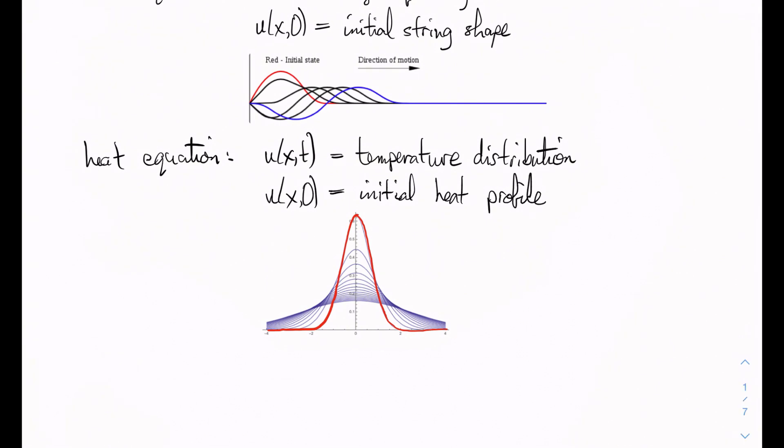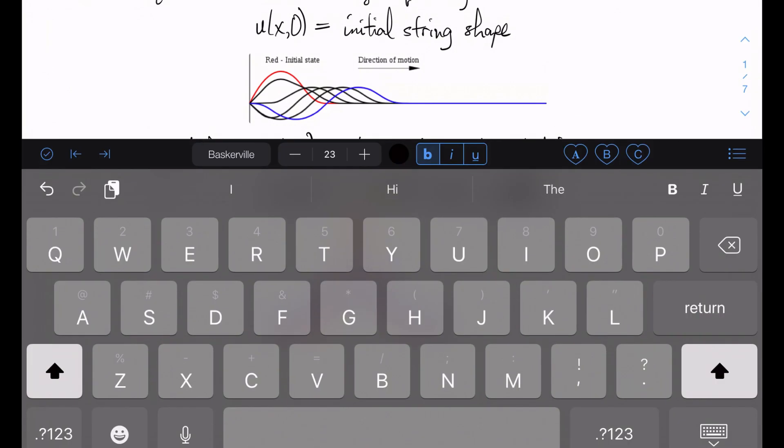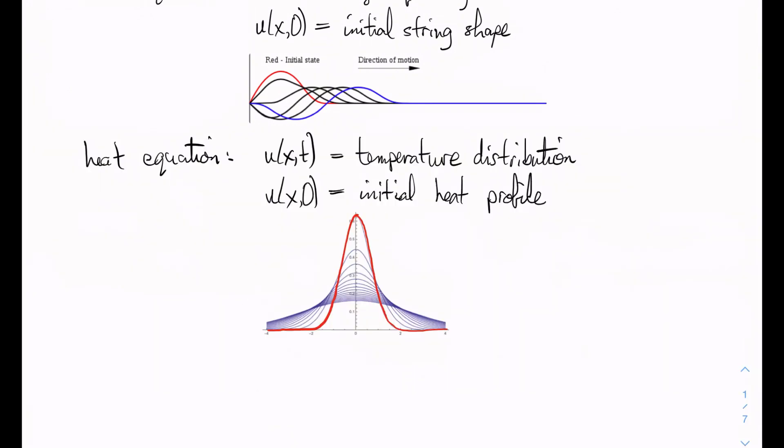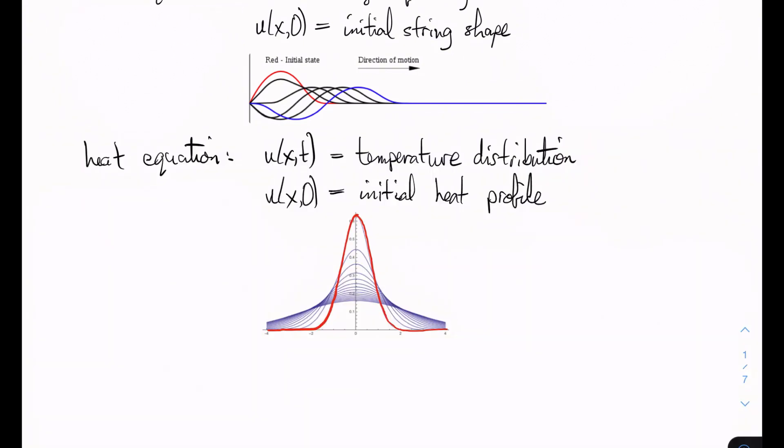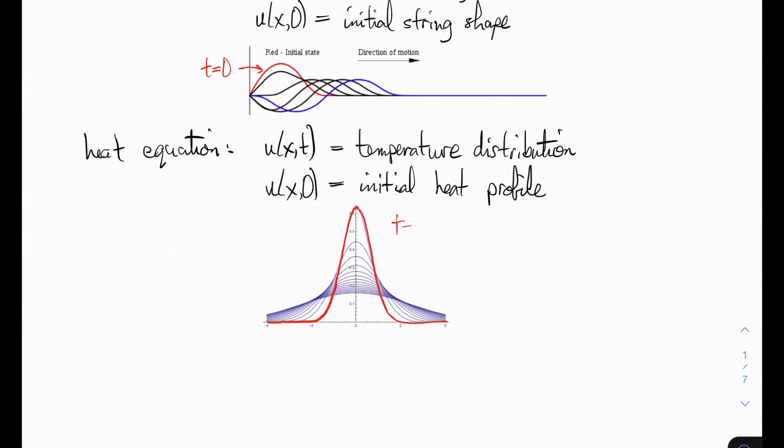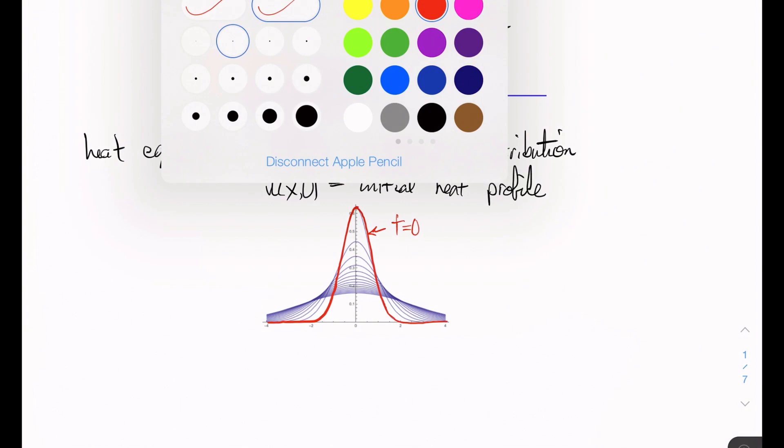And so in each of these pictures here, you can see they're time snapshots. So if we just look at time zero, that's this initial curve, that's where the system begins or the state that the system begins in.